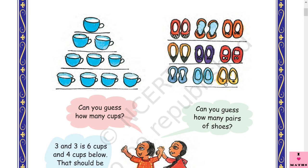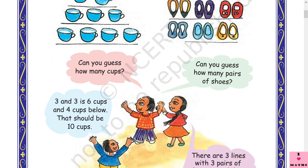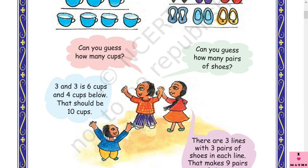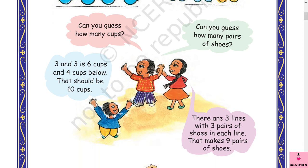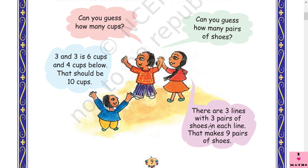Can you guess how many pairs of shoes? Each row has three pairs: three plus three is six, six plus three is nine. So nine pairs of shoes. Let's count: one through nine — yes, nine pairs! Three groups with three pairs each makes nine pairs of shoes.